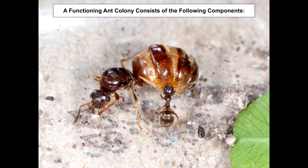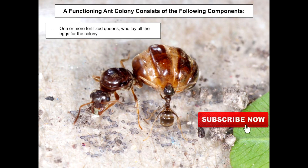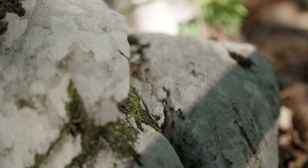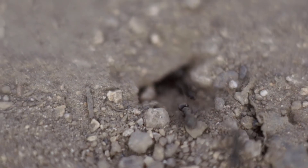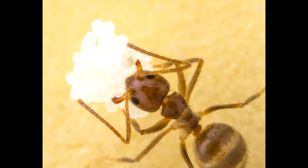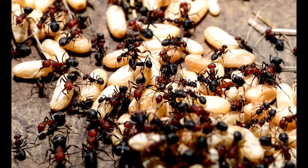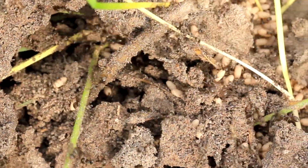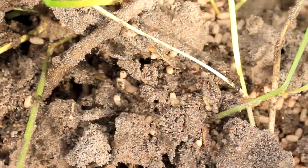A functioning ant colony consists of the following components: one or more fertilized queens who lay all the eggs for the colony; sterile female workers who undertake all the necessary and menial tasks for the colony, such as foraging for food and improving the nest. Eggs, larvae, and pupae are generally present in a colony as well, although in temperate environments, subspecies will hibernate without any brood.